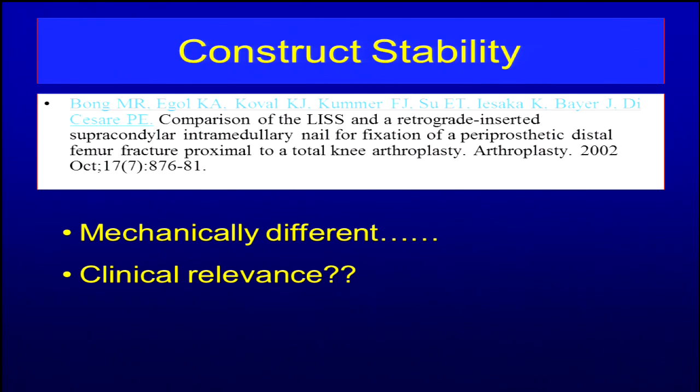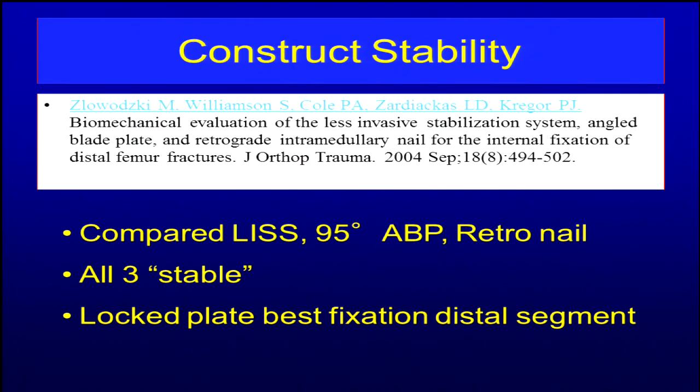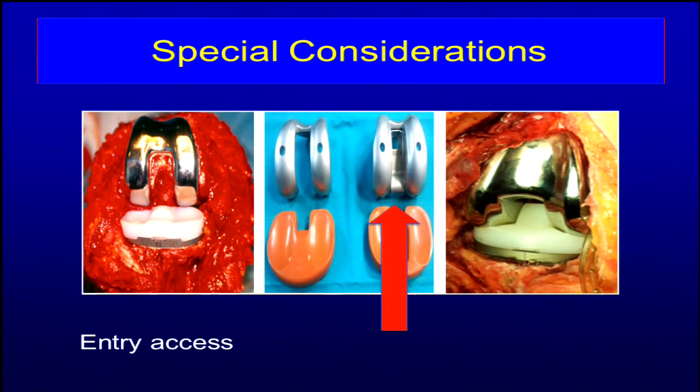There are a couple of biomechanical studies saying that modern nails and modern plates differ in how they act but are both stable. There are more bending forces applied to a plate — that's intuitive — but the rest of the stability of the implants is actually relatively similar. Both studies say the same thing: fixed angle plates and nails are very similar in the amount of stability and what you get out of them.